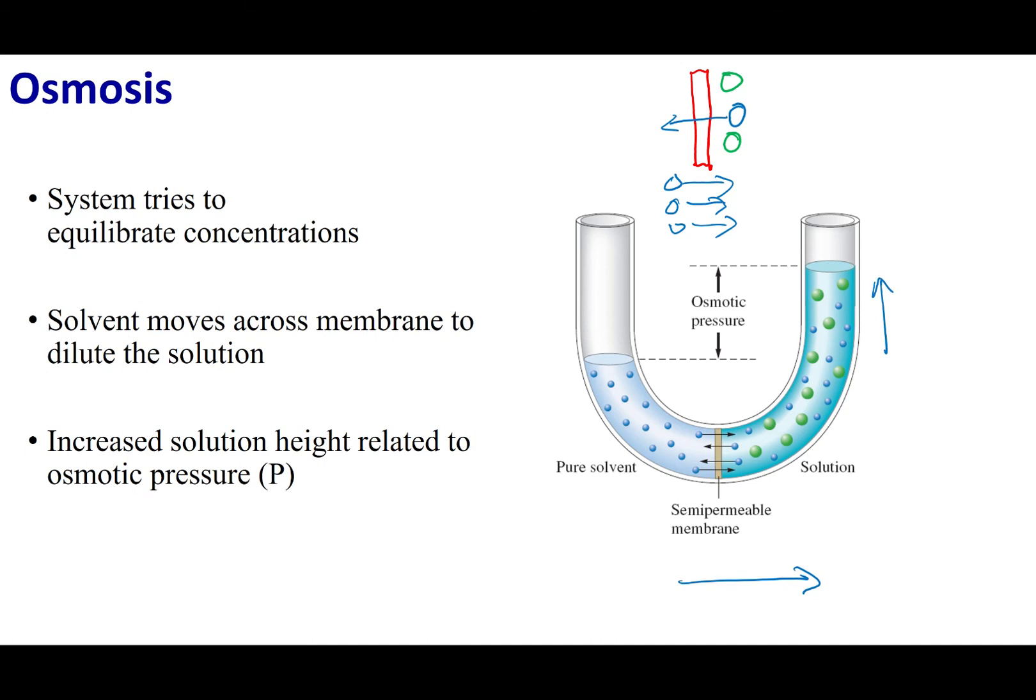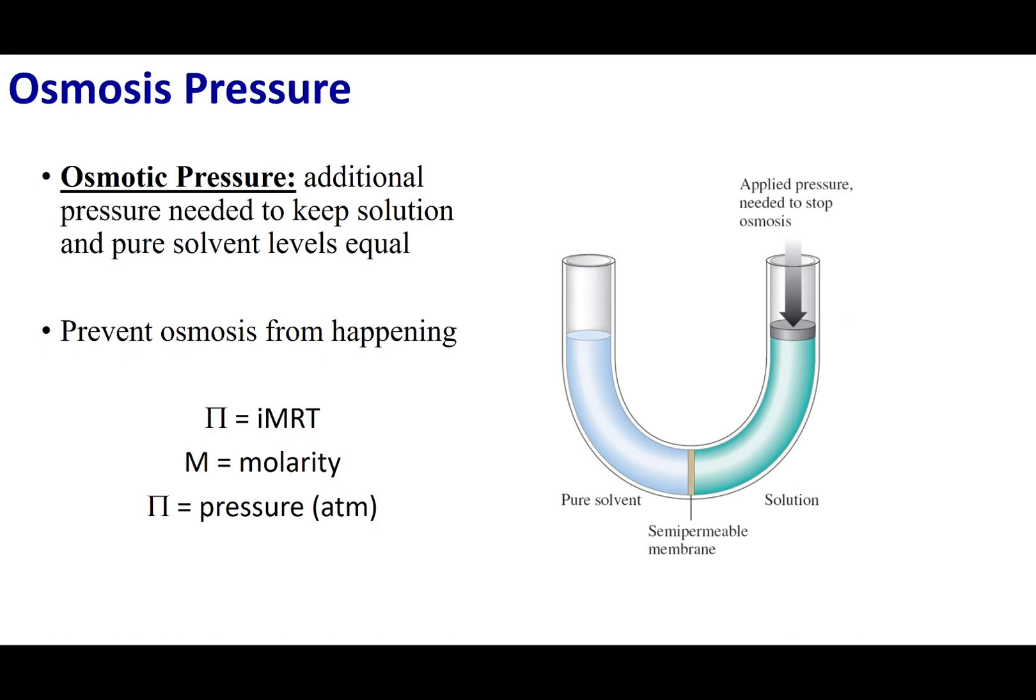And now I can measure my osmotic pressure. The osmotic pressure is the amount of pressure that I have to apply on the solution side to make sure that I get these two to be the same height. This is going to be defined by this equation right here. This big pi symbol is going to be the pressure applied. i is our Van't Hoff factor.